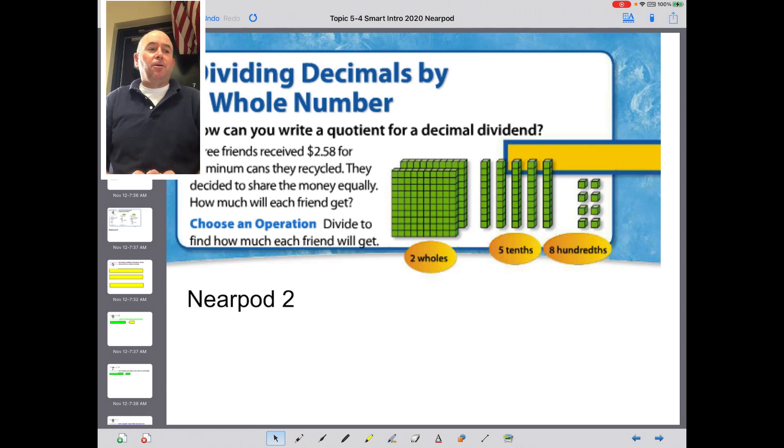Let's go into the book right now. The book then says dividing decimals by whole numbers. How can you write a quotient for a decimal dividend? And then it gives you a situation where you have three friends received $2.58 for aluminum cans they recycled. Boy, that's a lot of money, huh?